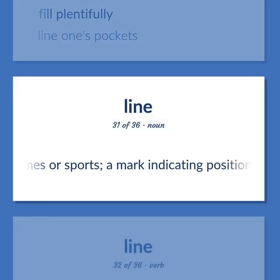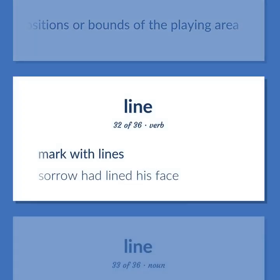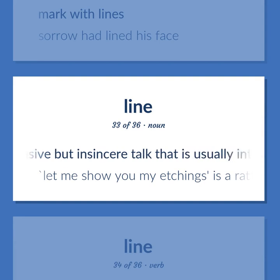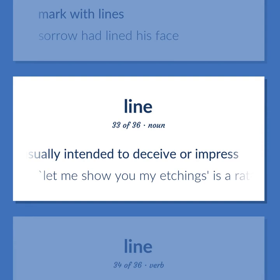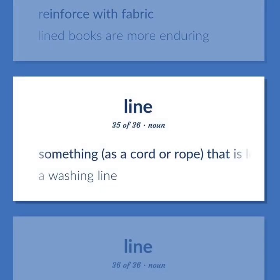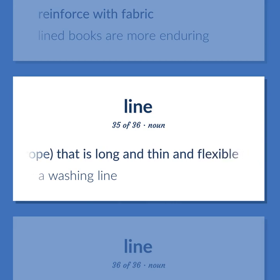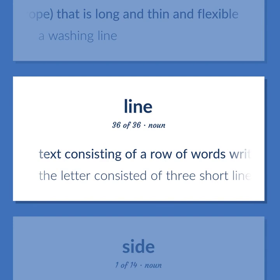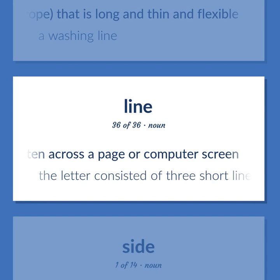LINE: In games or sports, a mark indicating positions or bounds of the playing area. Mark with lines — 'Sorrow had lined his face.' Persuasive but insincere talk that is usually intended to deceive or impress. 'Let me show you my etchings as a rather worn line.' Reinforce with fabric — lined books are more enduring. Something, as a cord or rope, that is long and thin and flexible — a washing line. Text consisting of a row of words written across a page or computer screen. 'The letter consisted of three short lines.'